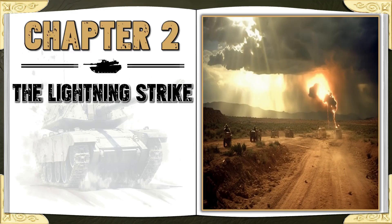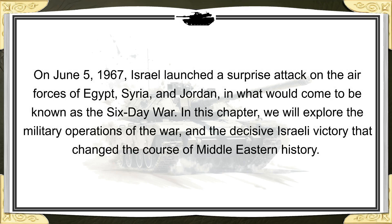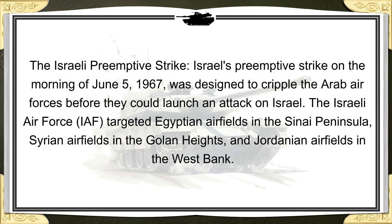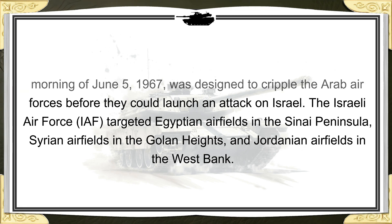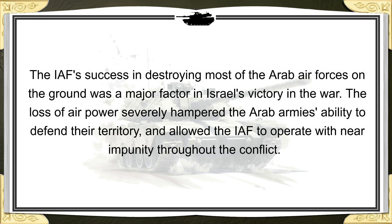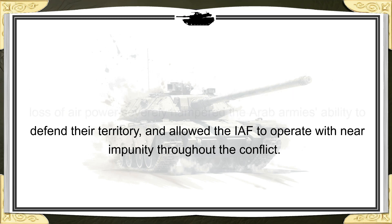Chapter 2: The Lightning Strike. On June 5, 1967, Israel launched a surprise attack on the air forces of Egypt, Syria, and Jordan in what would come to be known as the Six-Day War. Israel's preemptive strike on the morning of June 5, 1967, was designed to cripple the Arab air forces before they could launch an attack on Israel. The Israeli Air Force targeted Egyptian airfields in the Sinai Peninsula, Syrian airfields in the Golan Heights, and Jordanian airfields in the West Bank. The IAF's success in destroying most of the Arab air forces on the ground was a major factor in Israel's victory in the war, severely hampering the Arab armies' ability to defend their territory.